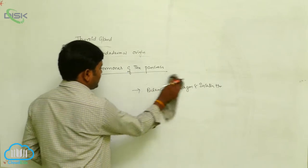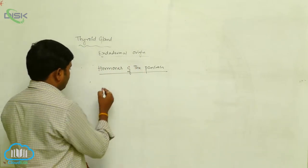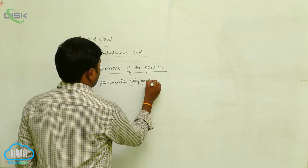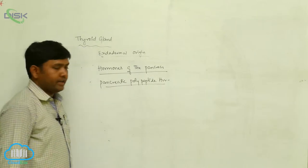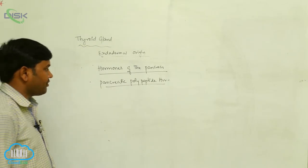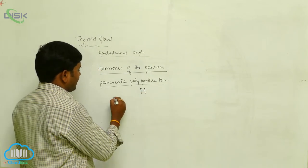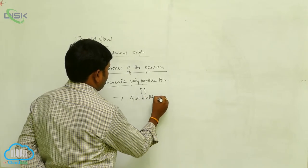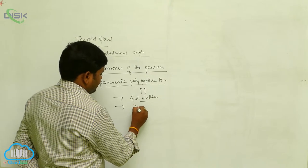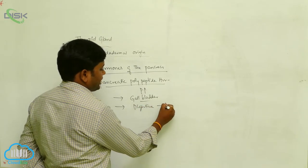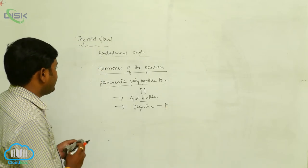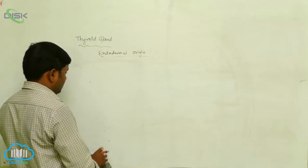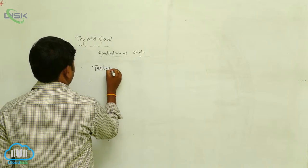Another hormone is pancreatic polypeptide hormone. It is derived from the pancreatic polypeptide cells. The main function of this hormone is related to the gallbladder and the releasing of digestive enzymes in the pancreas.